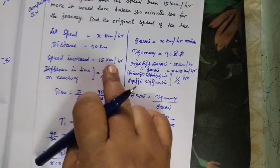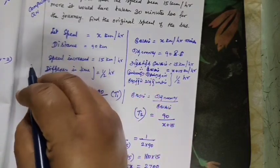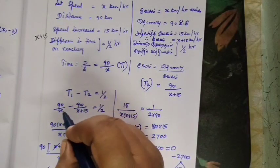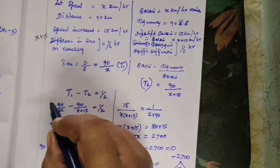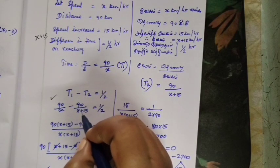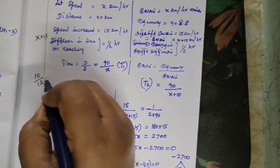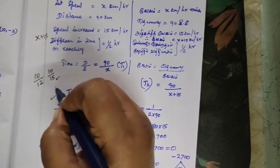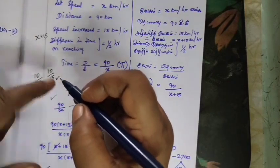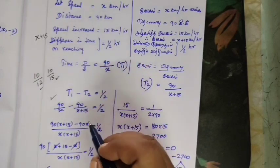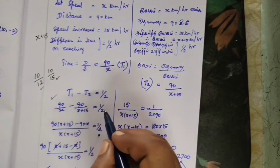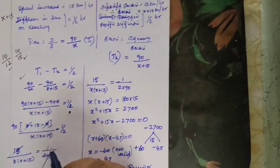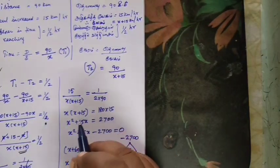The original speed is x, the increased speed is x plus 15. Time is equal to distance by speed. The distance is 90, the speed is x. The denominator increases the value — suppose it is 10 by 12, this is 10 by 15. So the value is less than this. The denominator increases, so this is greater and this is smaller. The difference is 1 by 2 — that is 30 minutes. The numbers have increased.